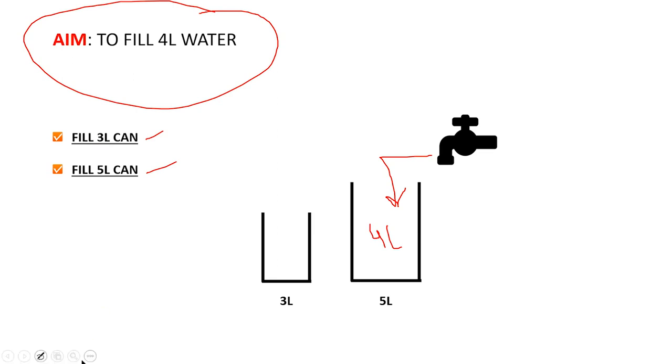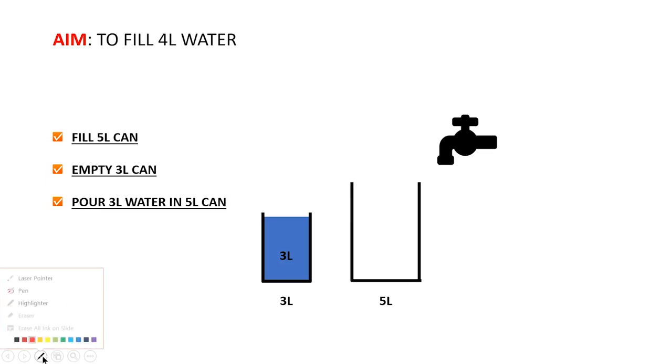For example, on this first slide there are two options to either fill the three liter can or the five liter can. If I choose the first option to fill the three liter can, I am automatically directed to another slide.